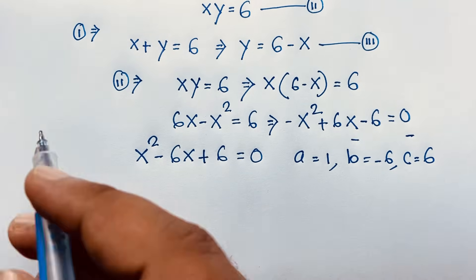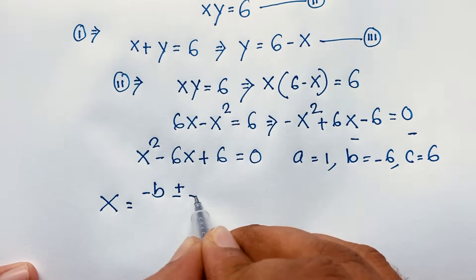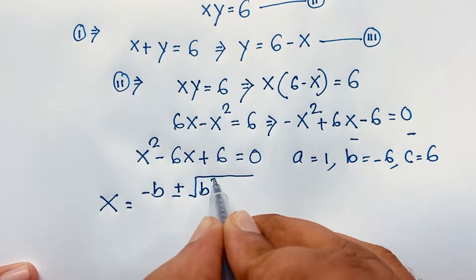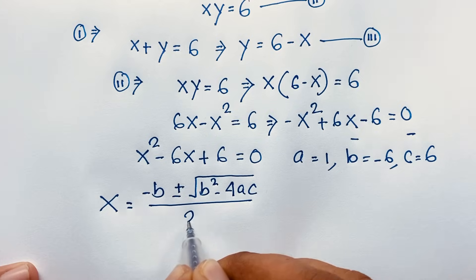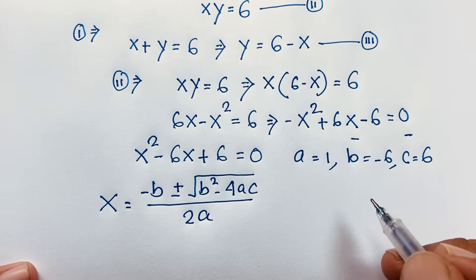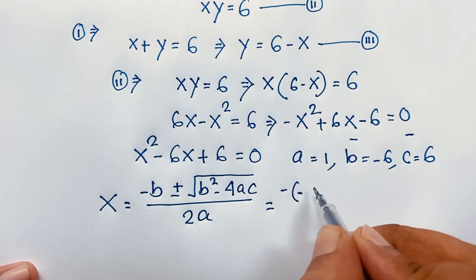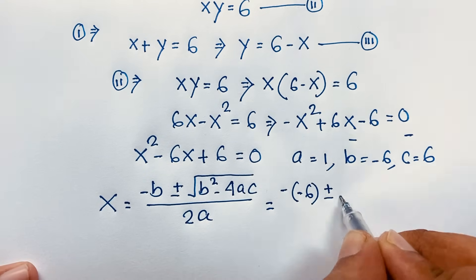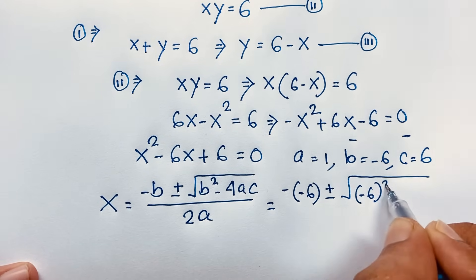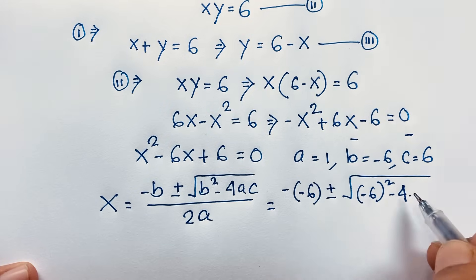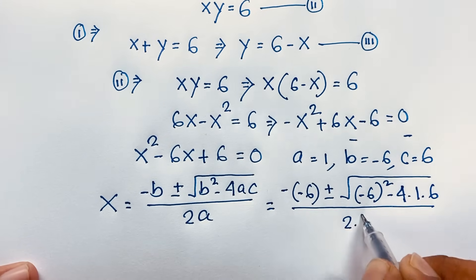So x equals minus b plus or minus square root of b squared minus 4ac, all over 2a. Now if I apply this formula, you can say: minus b — b is minus 6 — so it is plus 6, plus or minus square root of (minus 6) whole squared, minus 4 times a, which is 1, times c, which is 6, over 2a, where a is 1.